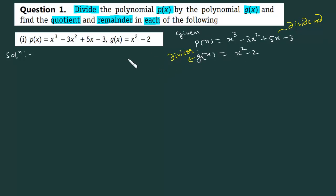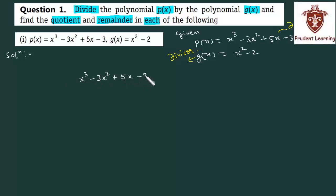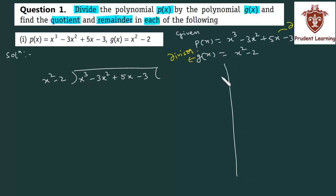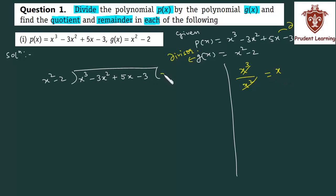Let us perform the division. x cube minus 3x square plus 5x minus 3 को हमको divide करना है x square minus 2 से. कैसे divide करते हैं, concept समझाता हूँ — सबसे पहले जो dividend है उसका highest degree term, उसको हम divisor के highest degree term से divide करते हैं. तो dividend का highest degree term है x cube, और इसको divide करेंगे divisor के highest degree term x square से, तो finally आपको मिलेगा x — यह quotient का एक term आ गया.